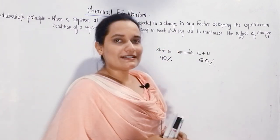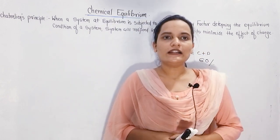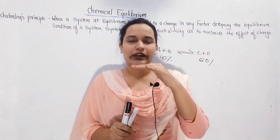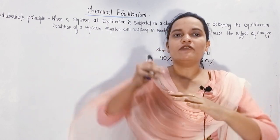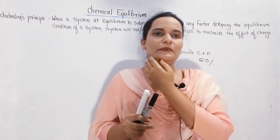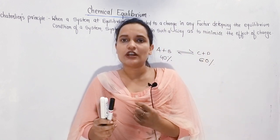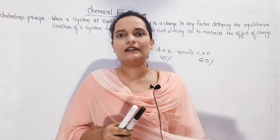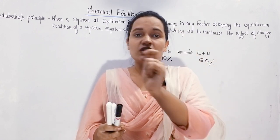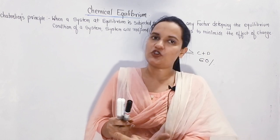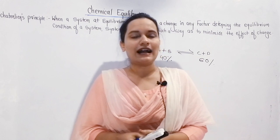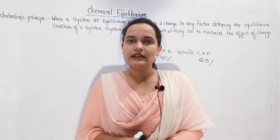So students, first of all what does Le Chatelier's Principle say? It says the same thing I just explained — if something is at equilibrium position and you give it an external pressure or effect, whether in terms of temperature, pressure, or change of volume — when you do this, the reactant will not bear it alone. It will send things towards the product side to minimize the effect on itself, and both sides will distribute equally.